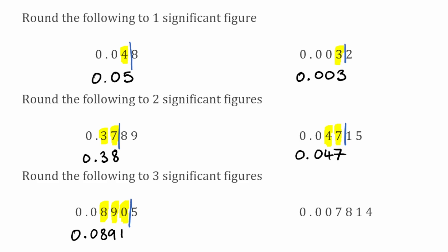For this very final example, again rounding to three significant figures — the first significant figure would be the seven, eight would be the second, and one would be the third. We draw our line and focus on the digit on the right-hand side, which is a four, so we're going to keep the previous digit the same — the one will remain as a one. So here we have zero point zero zero seven eight, and the one remains as a one. That'd be 0.00781.